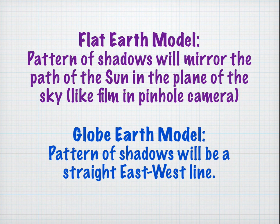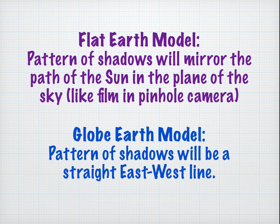Let's recap. On the flat Earth model, the pattern of shadows will mirror the path of the Sun in the sky — and this does not matter what map you use; this will be true if the Earth is flat. On the globe Earth model, the pattern of shadows on the equinox will be a straight east-west line.